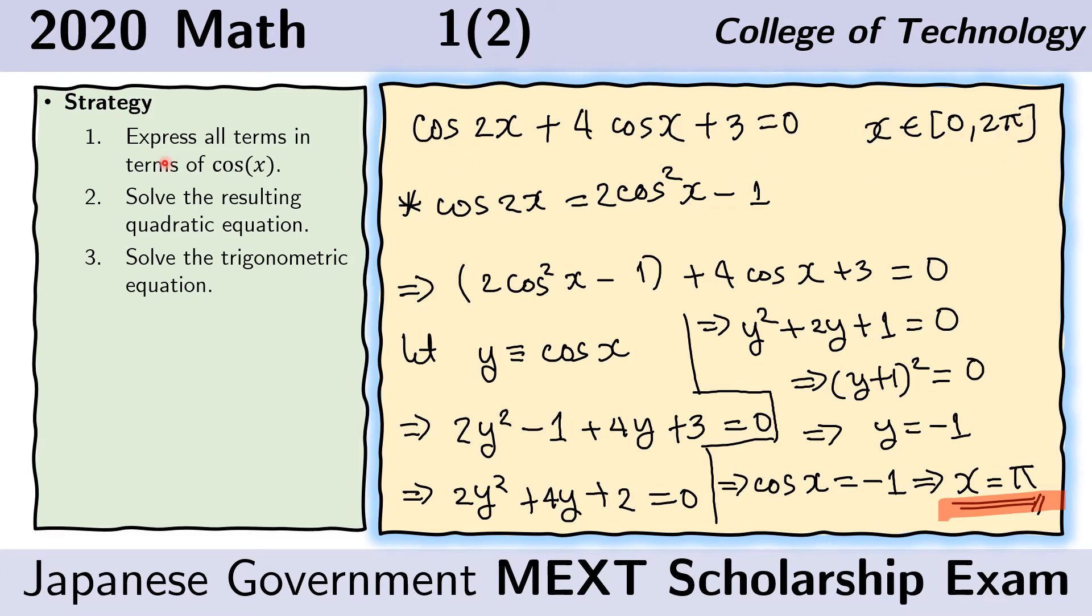And the first step, as we mentioned, is to express everything in terms of cosine x. And we use this identity that says that the cosine of 2x equals 2cos²x - 1. And so we can replace this with this. And now we have this. Now we see that everything is now in terms of cosine x.